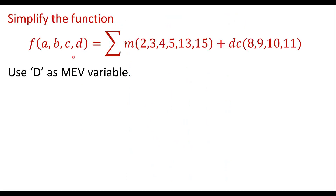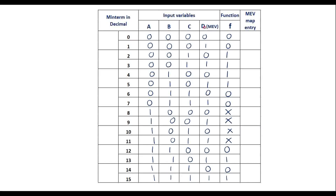Since we are using D as the MEV variable, the remaining three variables are A, B, and C. For three variables we write minterms 0 through 7, because with three variables we have 2³ = 8 cells. So we write 8 minterms from 0 to 7.